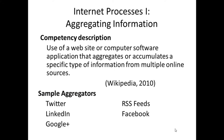An aggregating information competency description can be viewed as the use of a website or computer software application that aggregates or accumulates a specific type of information from multiple online sources — taken from Aggregation, Wikipedia 2010. Sample aggregators include Twitter, RSS feeds, LinkedIn, Facebook, and Google Plus.